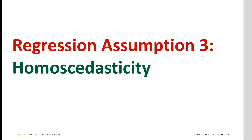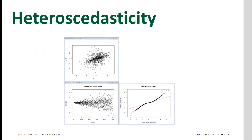Regression assumes that the standard deviation of observations does not change over the independent variables. The violation of the homoscedasticity assumption is called heteroscedasticity. It refers to the situation where the standard deviation of the sample changes over time. Heteroscedasticity can be detected by plotting residuals over time or over any of the independent variables. If the dispersion of residuals is increasing or decreasing, then the assumption may be violated.